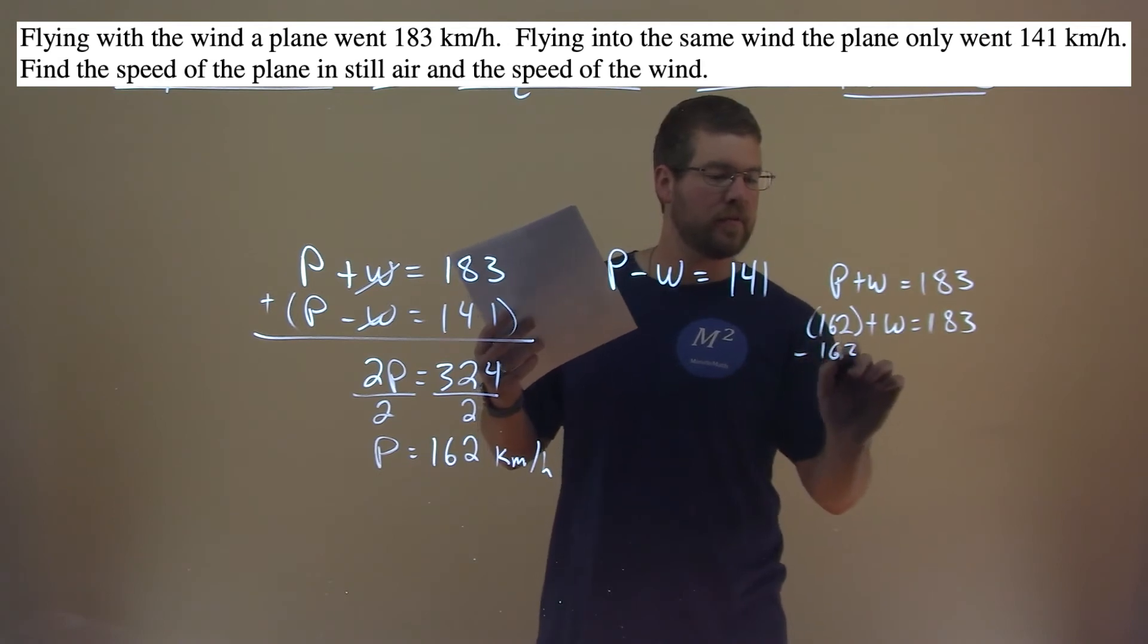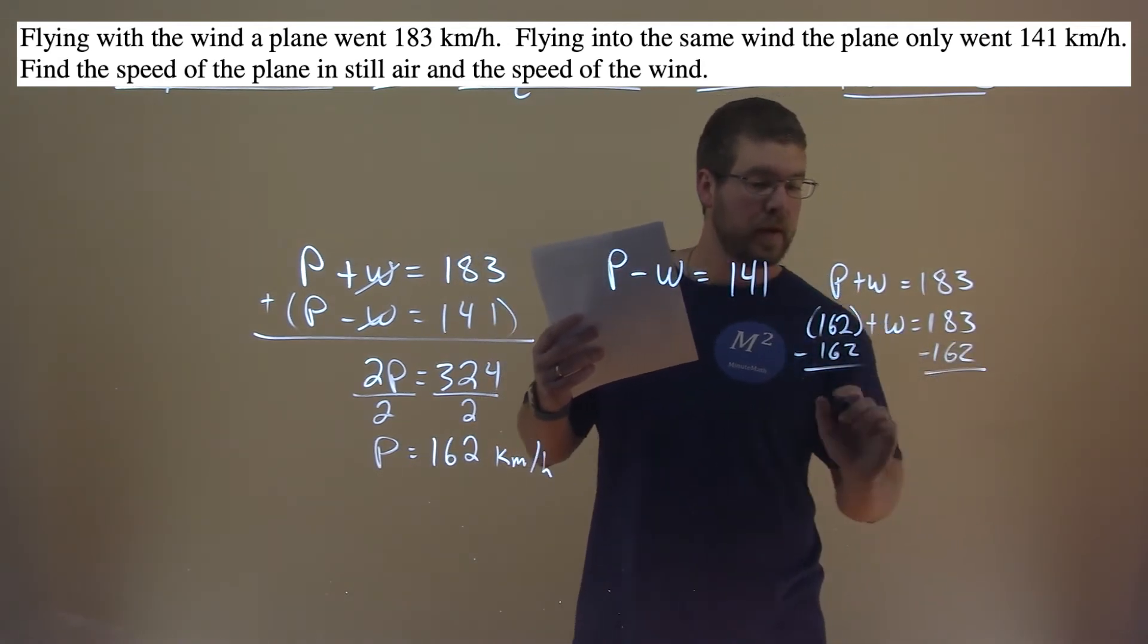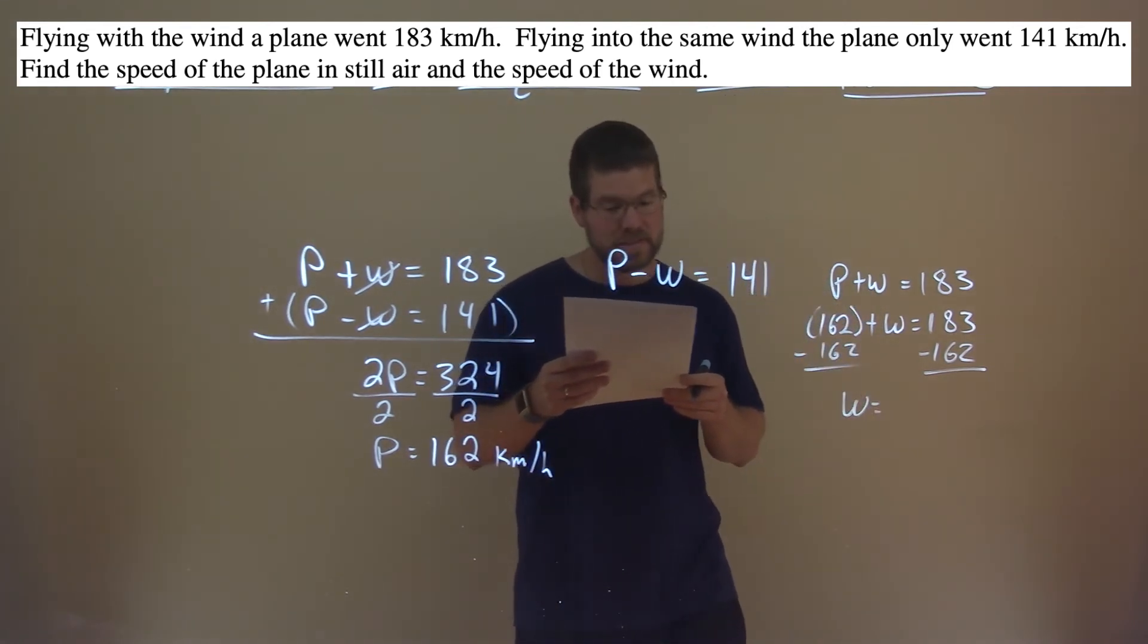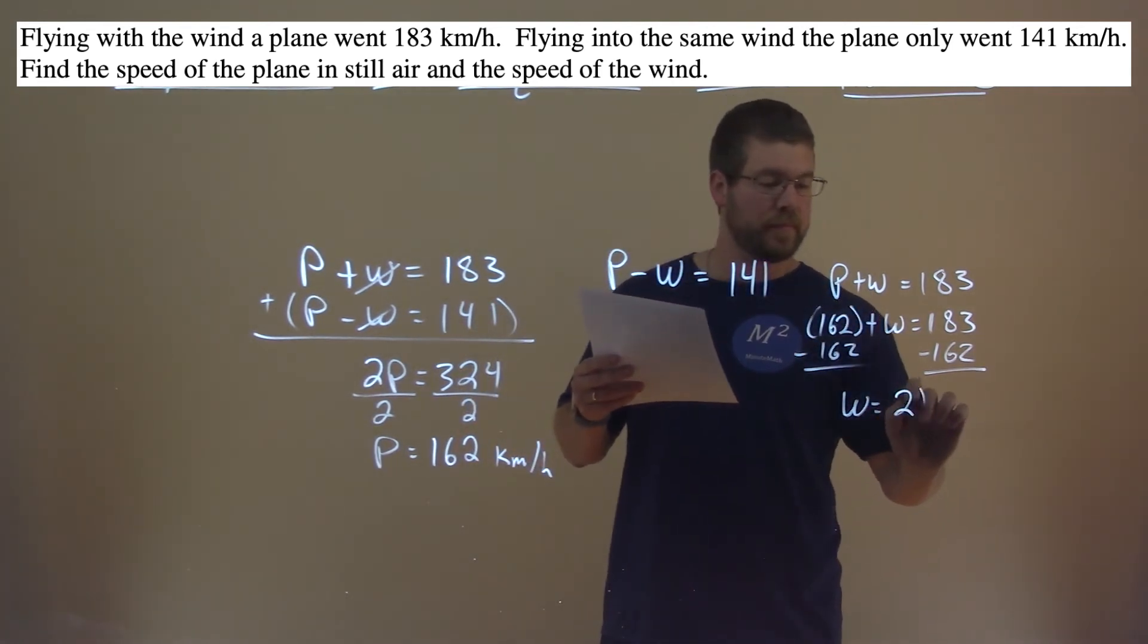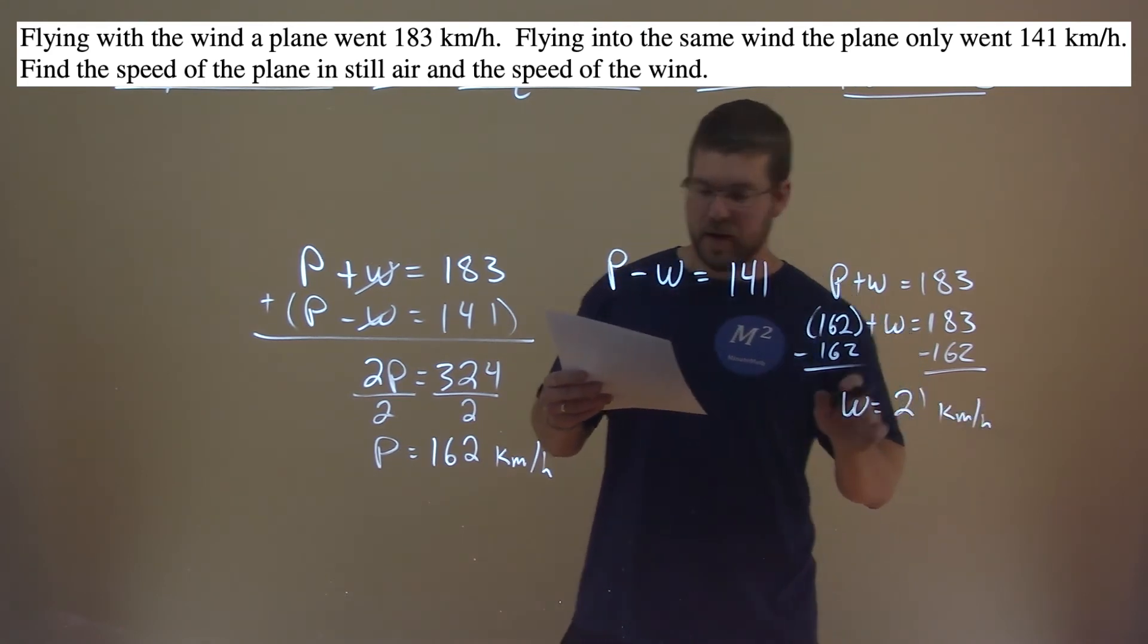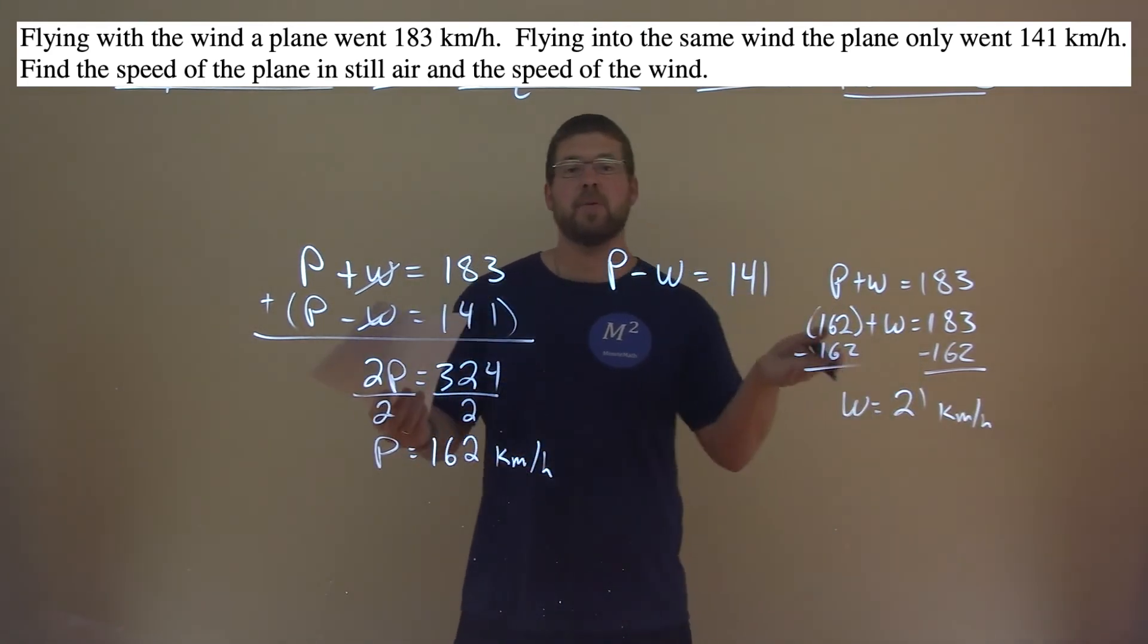And let's solve for W. Subtract 162 from both sides. Not too bad. And W equals 183 minus 162, which is 21. So 21 kilometers per hour is now also the speed of the wind. So there we have our final answer.